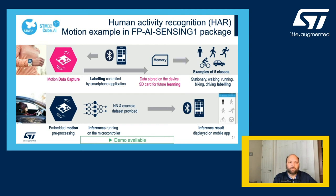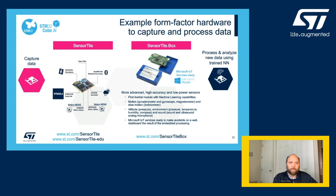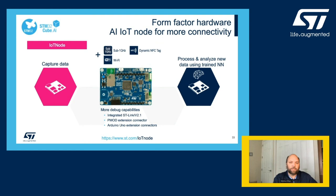This function pack supports several different ST boards. For example, the SensorTile board with the STM32 L4 Ultra Low Power MCU, Bluetooth Low Energy radio, pressure sensor, accelerometer, gyroscope, and magnetometer. The SensorTile.box includes a more powerful STM32 L4 Plus Ultra Low Power MCU and more advanced high-accuracy low-power sensors, such as the LSM6DSO inertial sensor with machine learning capabilities. The IoT node offers, in addition to the STM32 L4 Ultra Low Power MCU and different sensors, more connectivity beyond BLE, such as Wi-Fi, sub-1 GHz, and NFC capability.